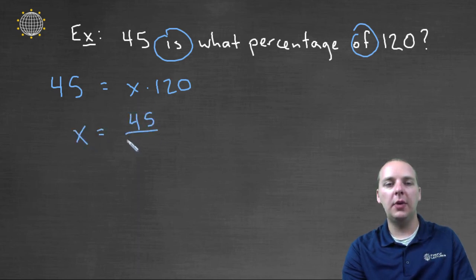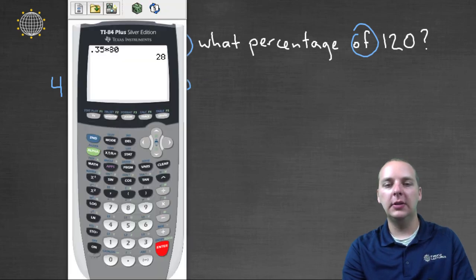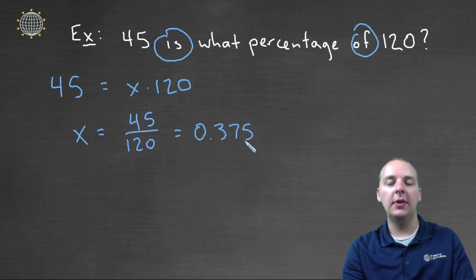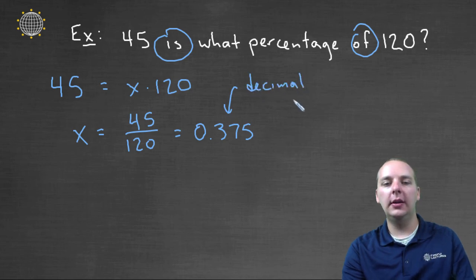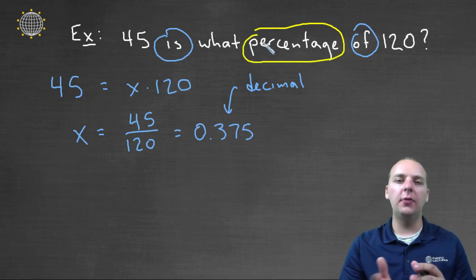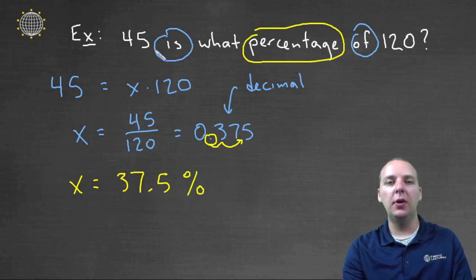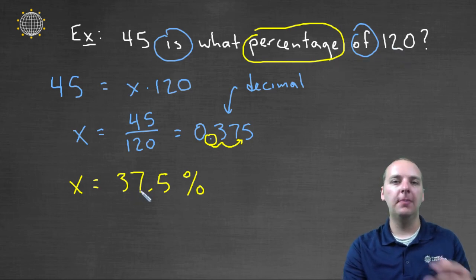We'll have forty-five divided by one twenty, and we can type this in on the calculator. Forty-five divided by one twenty would give us point three seven five, zero point three seven five. Now, be careful though, this is actually a decimal, but I wanted it expressed as a percentage. So how do we convert from decimals into percents? Well, we know this well. We'll take this decimal place and move it one, two places to the right. So x, as a percentage, would be thirty-seven point five percent. So let's read this again, forty-five is thirty-seven point five percent of a hundred and twenty, and that makes perfectly good sense.